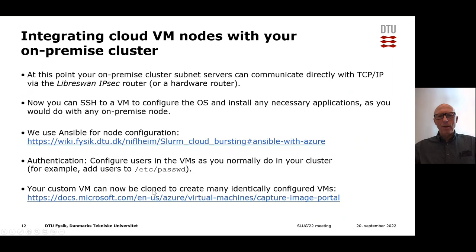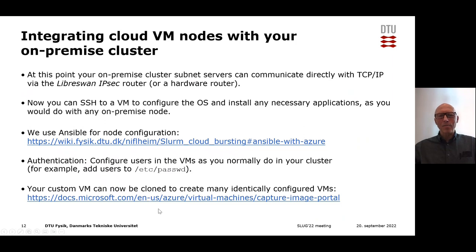When you have a VM in Azure that you think does everything you want — it has Slurm, it will be able to run jobs, and so on — you can clone as many copies as you like in Azure of this working VM. Store it as an image, as described in this Azure documentation page.